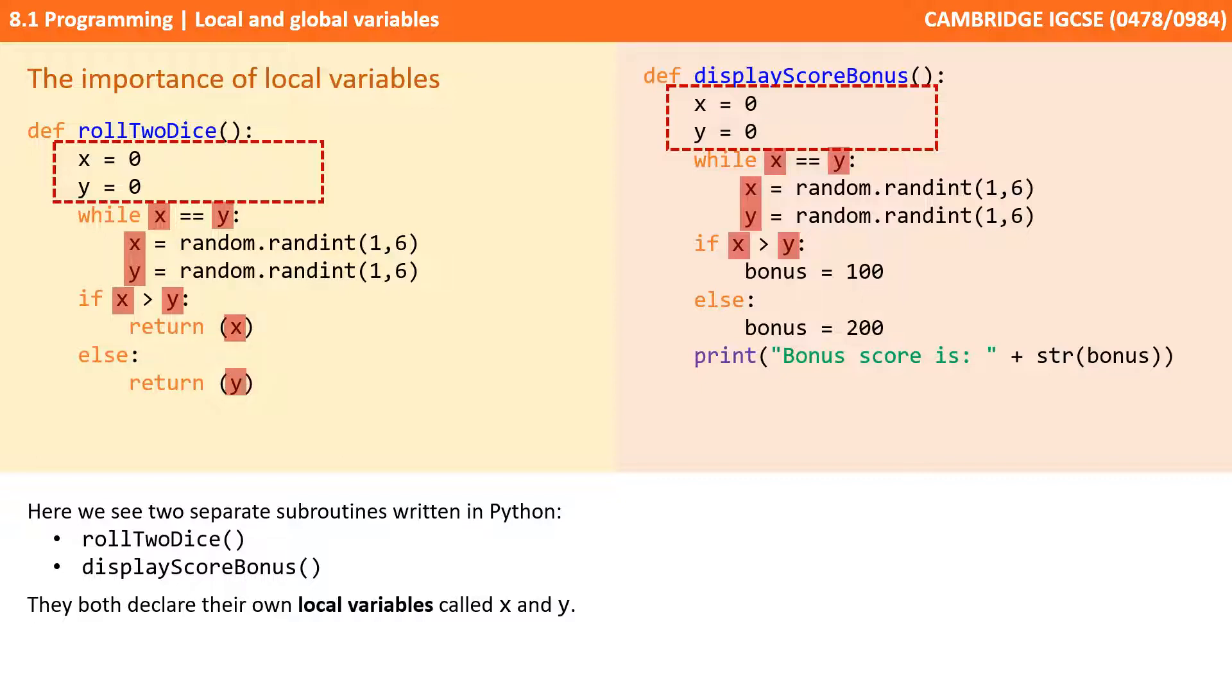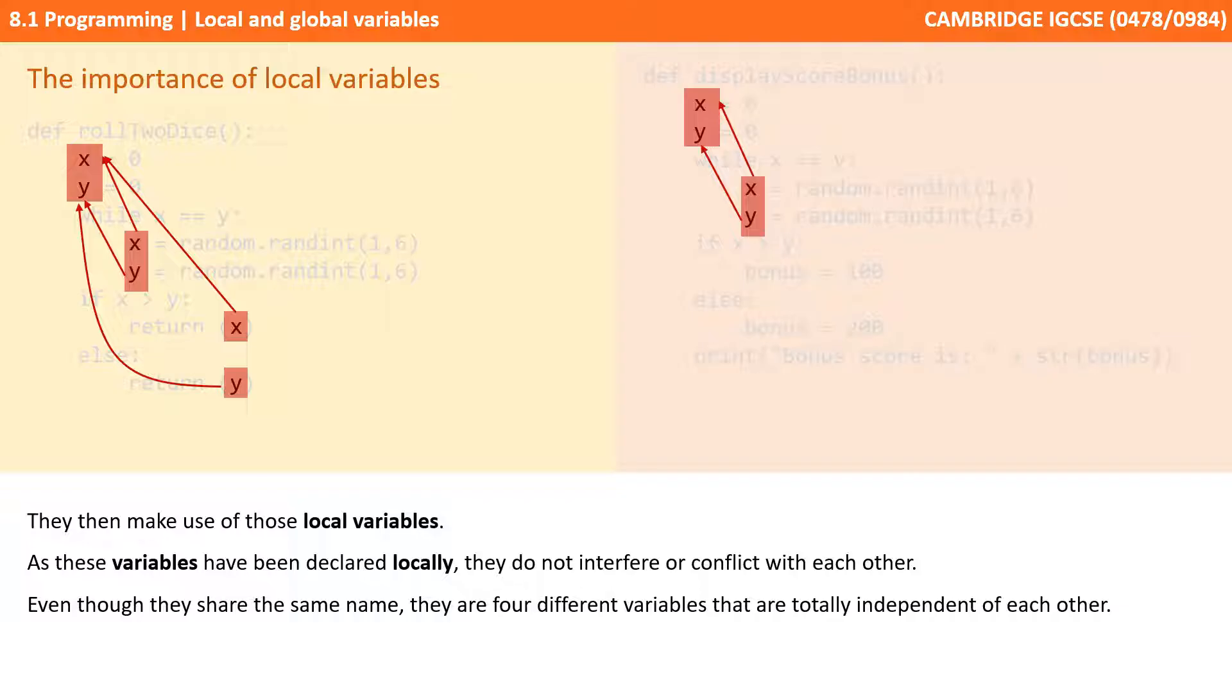We can see multiple situations within each subroutine where X and Y are being used. As these variables have been declared locally, they do not interfere or conflict with each other. Even though they share the same name, they are four different variables that are totally independent of each other.